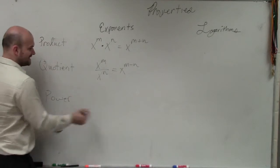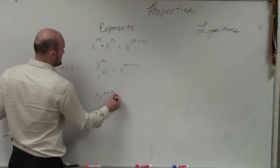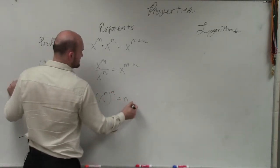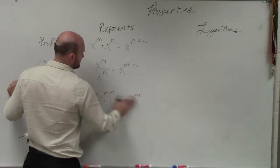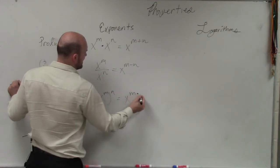And then the last thing is, if we had a property, x to the m raised to the n, then we would rewrite that as—I'm sorry, we would then multiply your powers, x to the m times n.